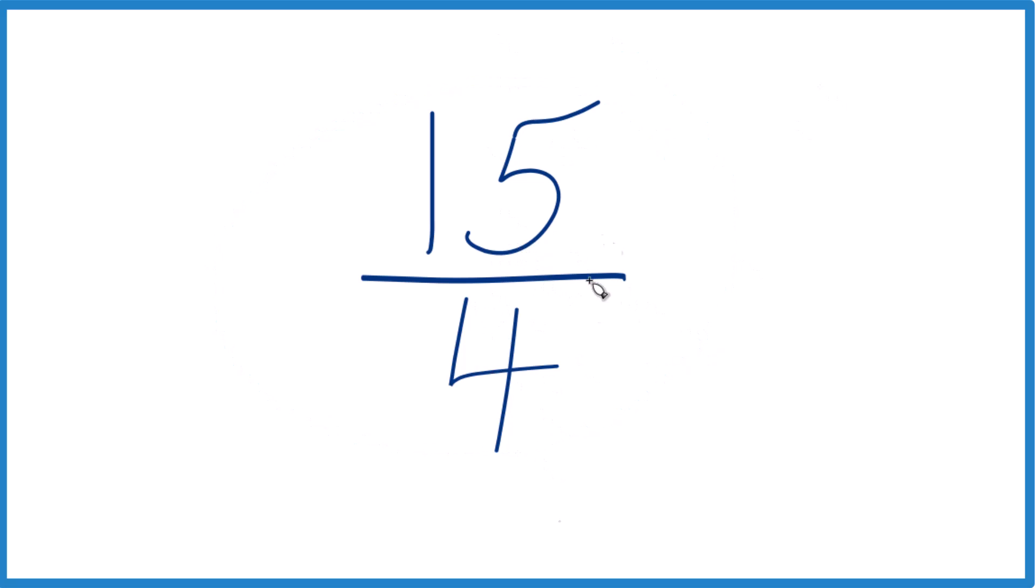We need to find a number, a whole number that goes evenly into 15 and 4, and there isn't a number that does that other than 1. What that means is that 15 fourths is already simplified. We can't reduce it any further.